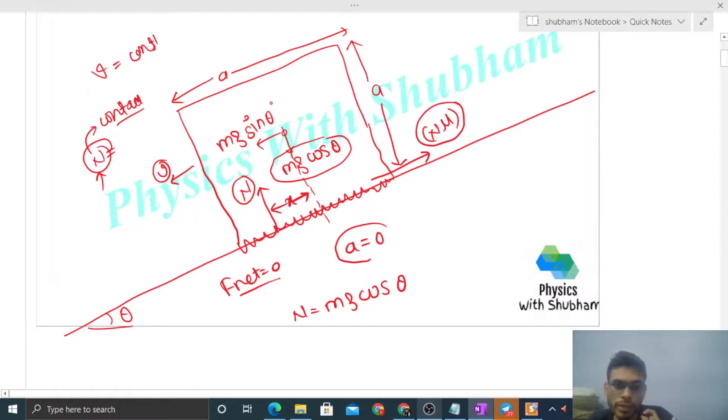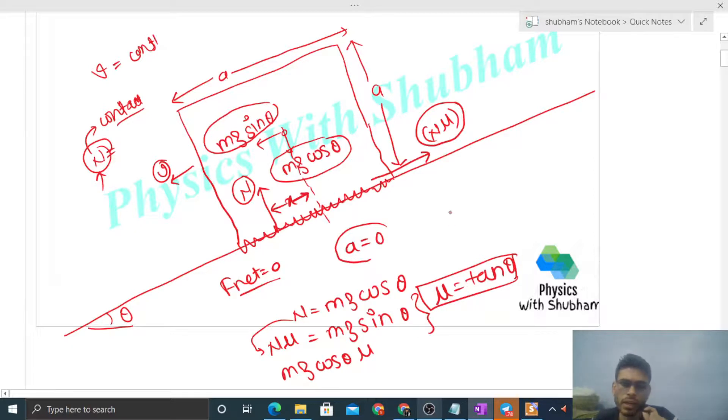Parallel to the surface, friction N times μ equals mg sin theta. So from here μ will be tan theta. This friction force N times μ has value mg sin theta.